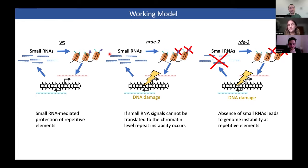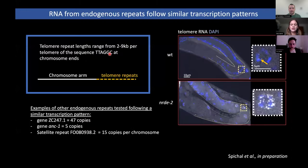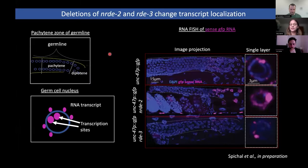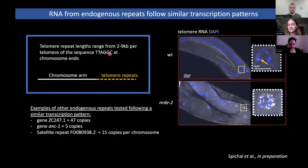Regarding your plasmid assay, where you have sense and antisense transcripts simultaneously, do you think that's specific to the plasmid, or is that also going to happen in the genome that has chromatin regulation as well? We're currently in the process of analyzing data. For the telomeric repeats, we did see antisense telomeric repeats in this process. We did not see antisense transcription from all of the genes analyzed, so I think it very much depends on the type of repeat. We still need more data to confirm how it happens.